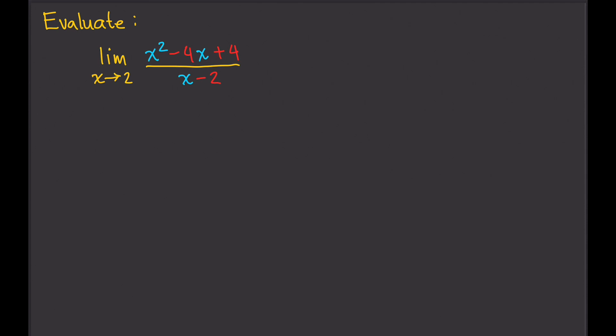So, for example, this one — if we plug in 2 for x, the denominator is 2 minus 2, which is 0. And that's undefined, so we can't do that.